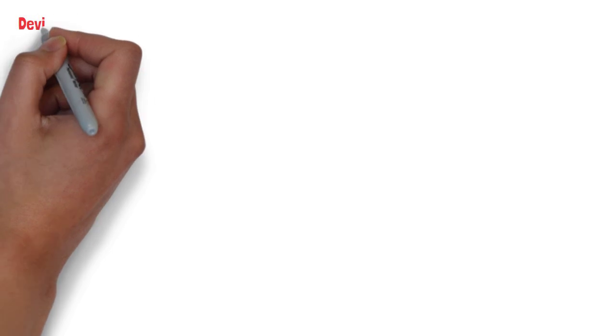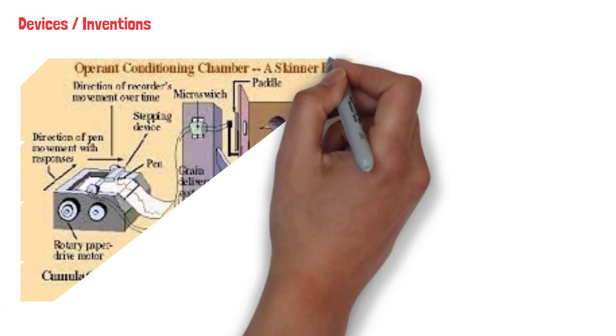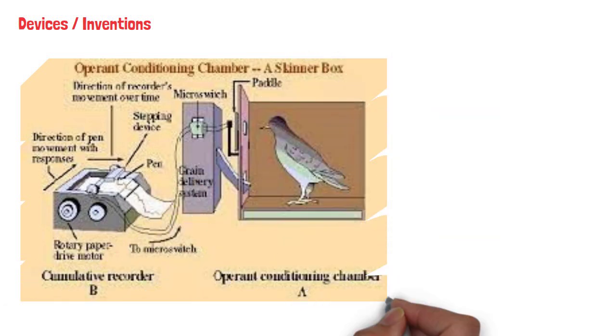Skinner invented different devices during his boyhood and he put these skills to work during his studies on operant conditioning. He created a device known as an operant conditioning chamber, often referred to today as a Skinner box. The chamber could hold a small animal, such as a rat or pigeon. The box also contained a bar or key that the animal could press in order to receive a reward.